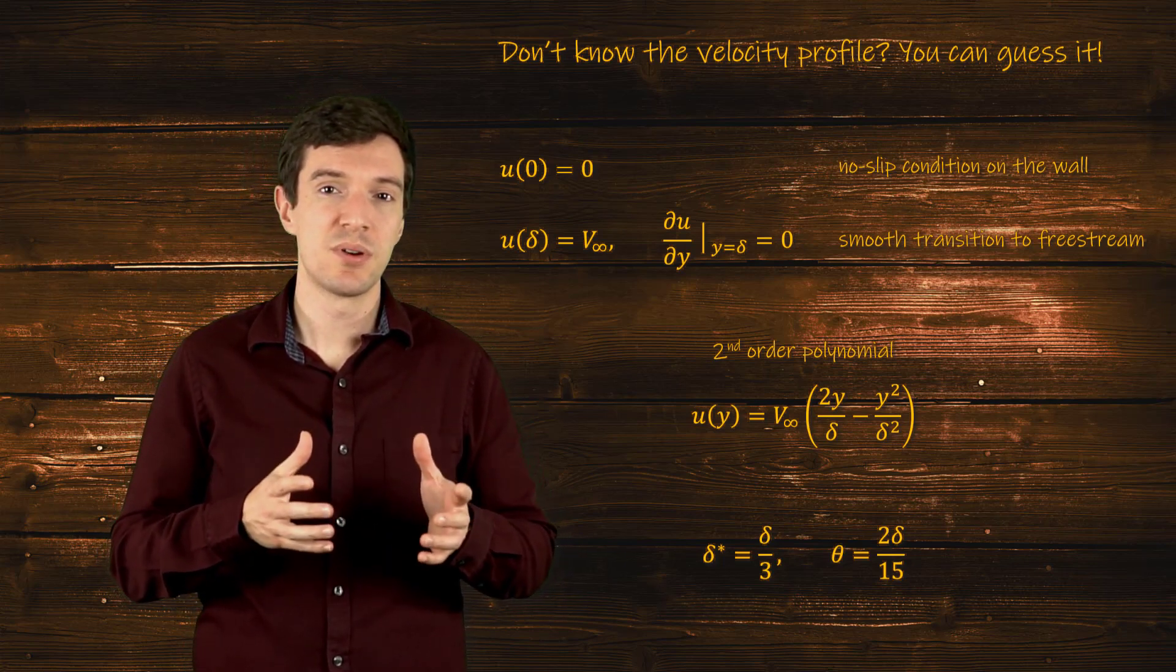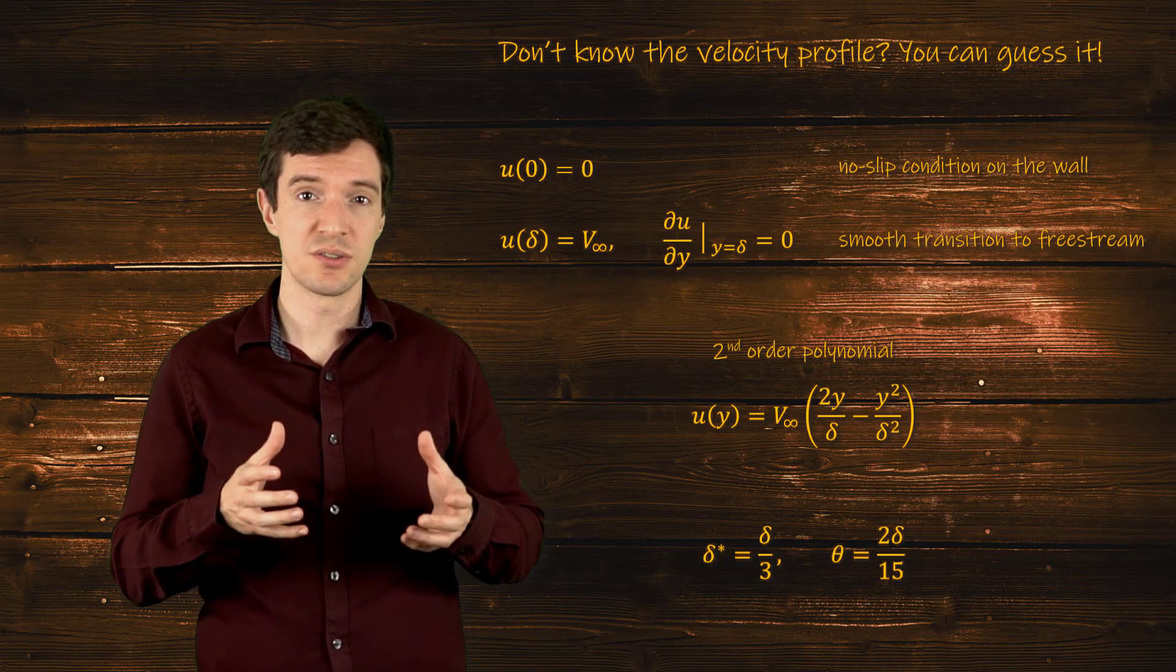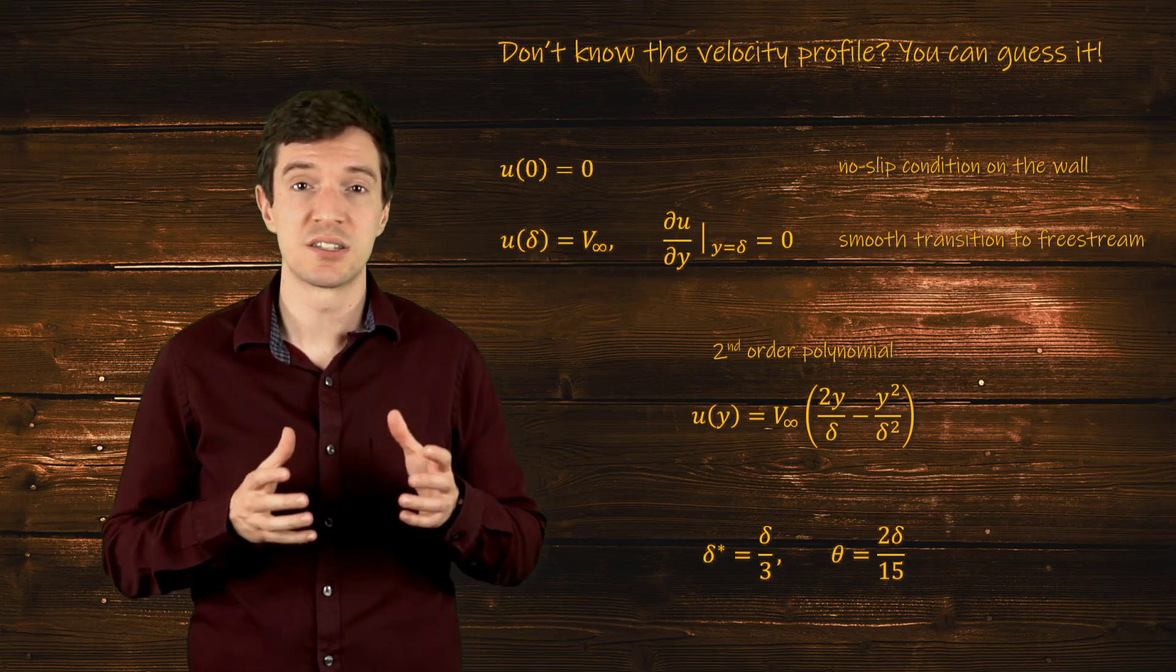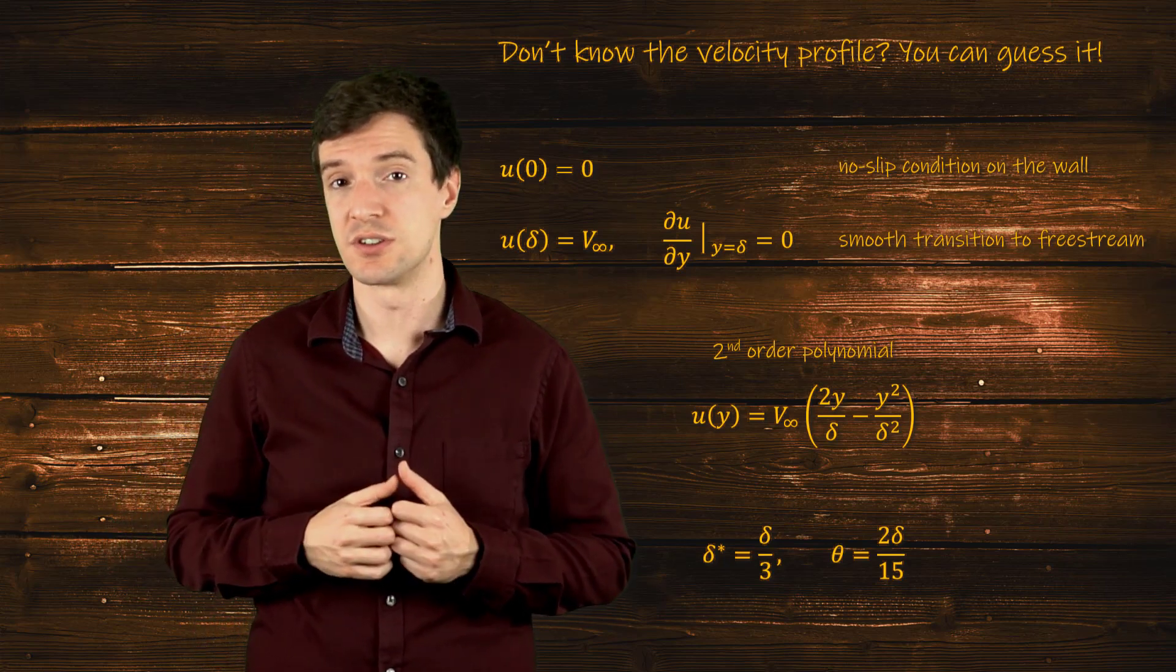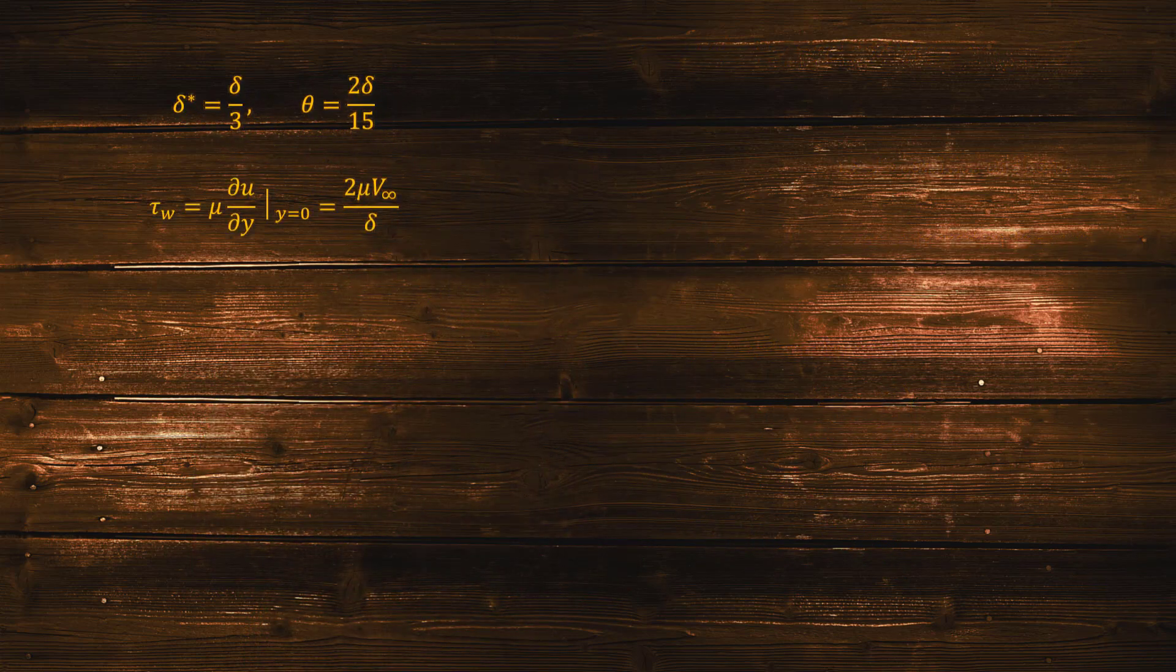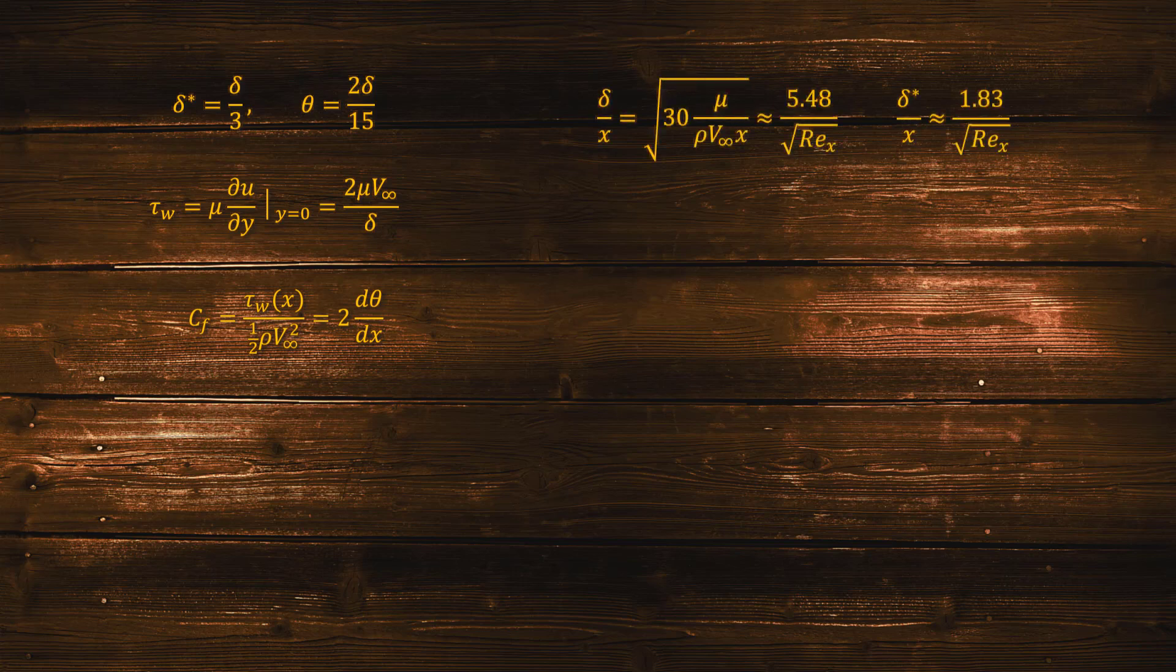The next step is to use these relations to obtain an expression for the drag coefficient. In order to do so, we can first get an expression for the shear stress based on the second order polynomial profile and then substitute it into the expression for the friction coefficient. Doing so, we can get approximate relations to estimate the boundary layer thickness.